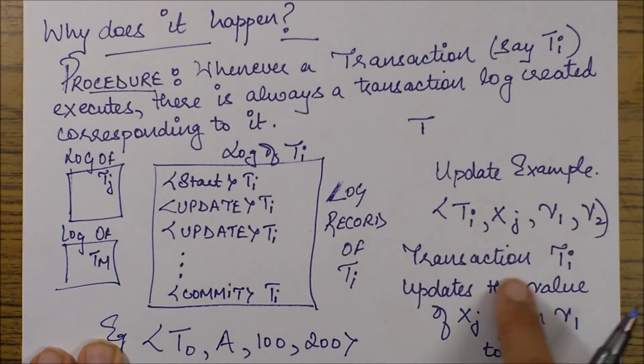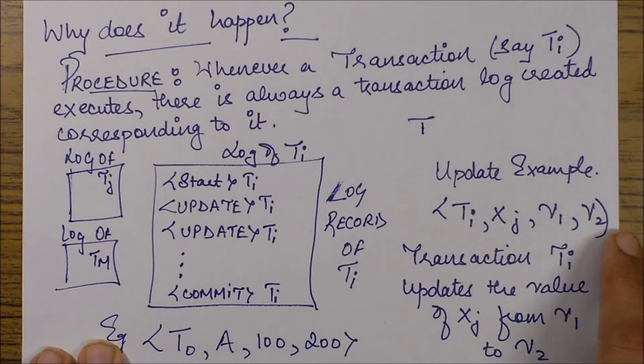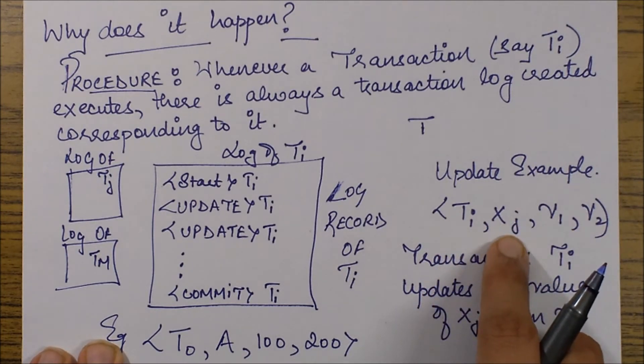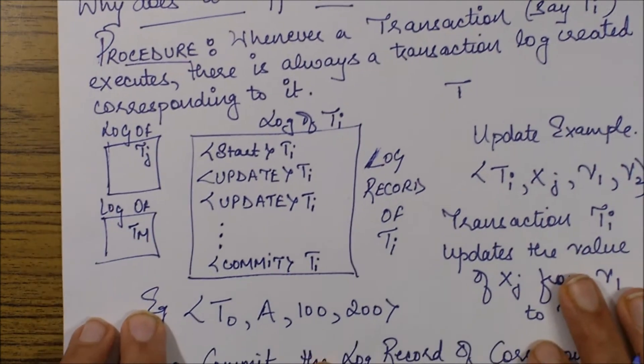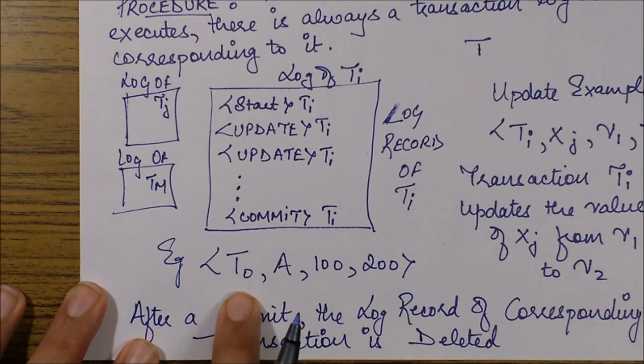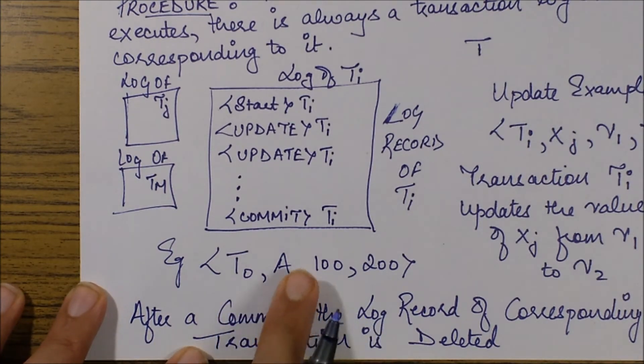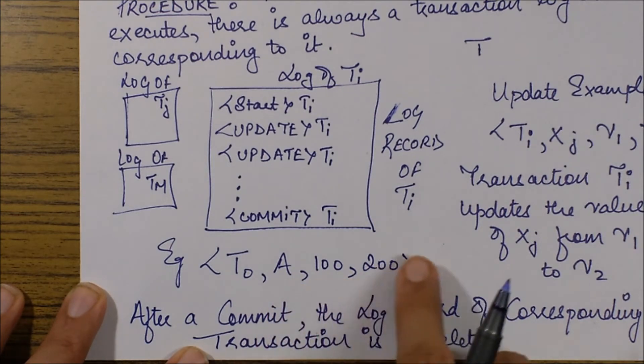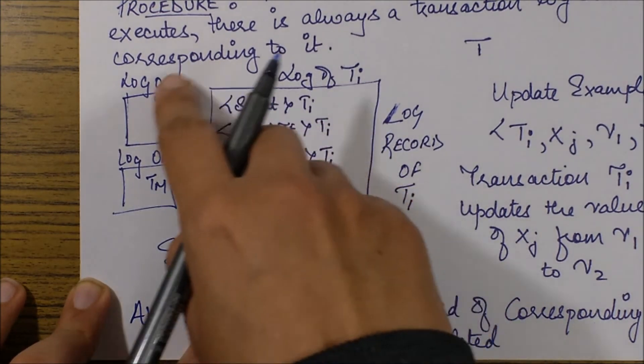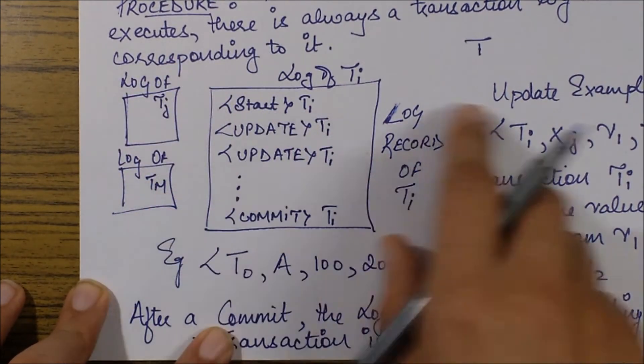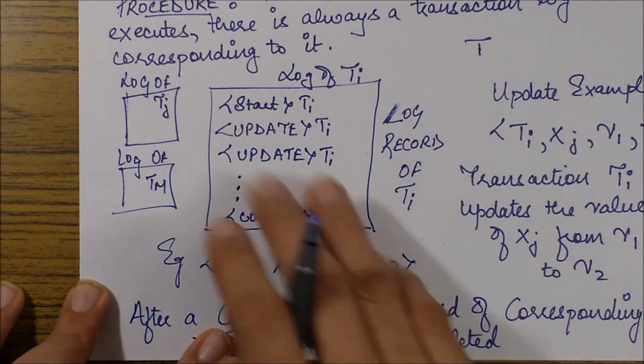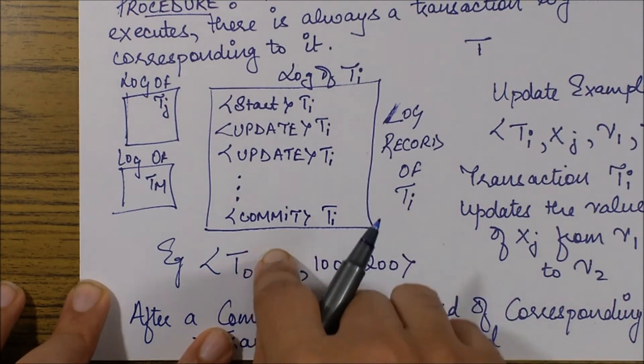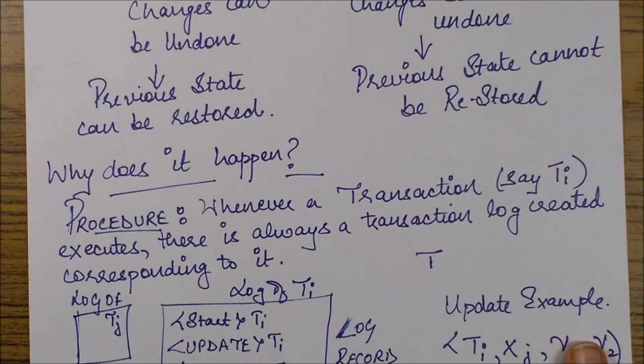An example of update procedure or update call would be Ti, Xj, V1, V2, which means Ti transaction is performing a change on Xj attribute or data item and value changes from V1 to V2. For example, T0 transaction changes the attribute or data item value of A from 100 to 200. In this similar manner we have various transaction logs, and the interesting thing is after the commit of this transaction, the database actually removes this log or deletes the log corresponding to that transaction Ti.